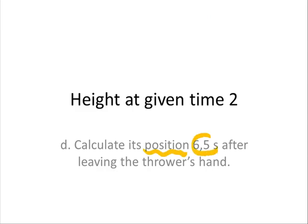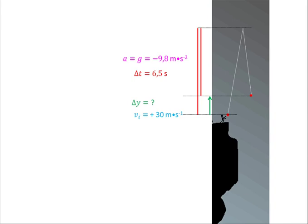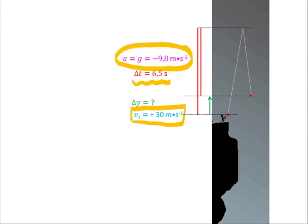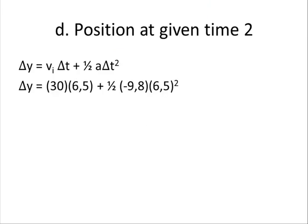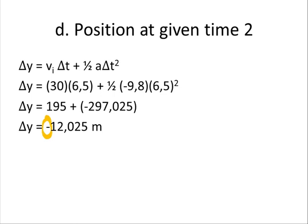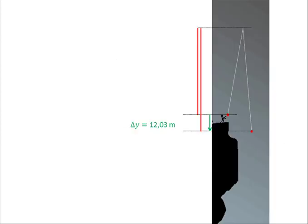What is the ball's position 6.5 seconds after leaving the thrower's hand? We put in all our information: initial velocity 30 m/s, time 6.5 seconds, acceleration due to gravity the whole time since it's in free fall. We find the displacement, substitute values, and get a negative answer — don't forget the unit meters. This negative value means the ball ends lower than where it started, and a revised diagram confirms this picture is correct.